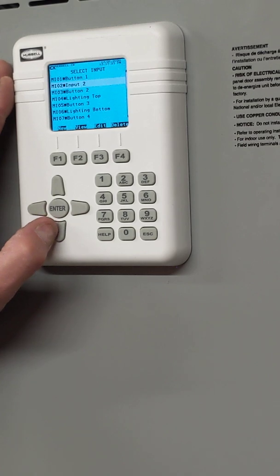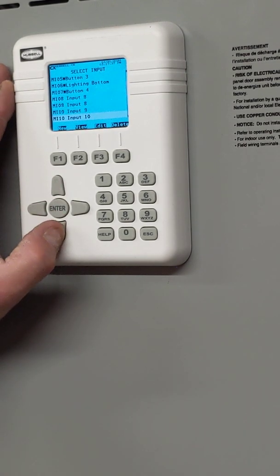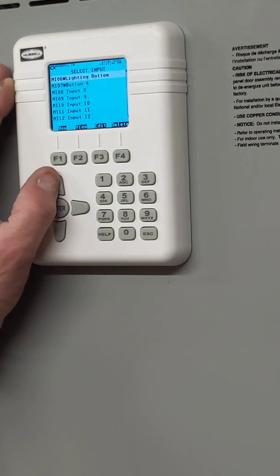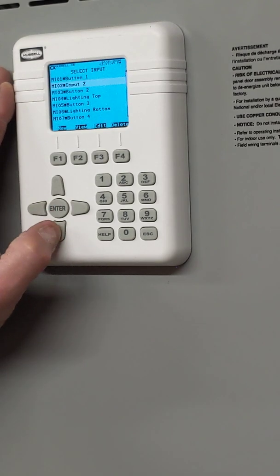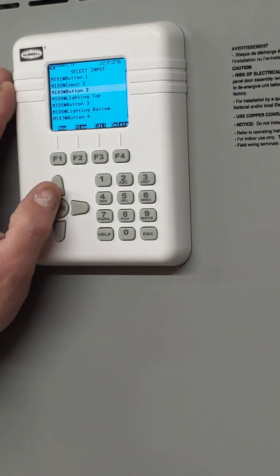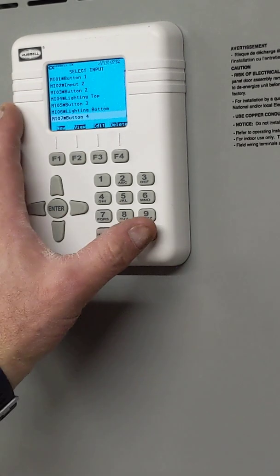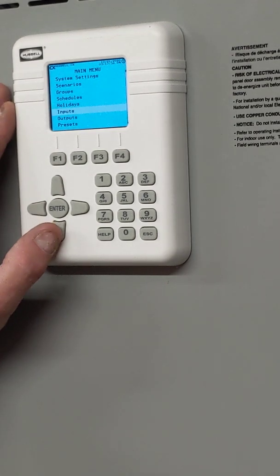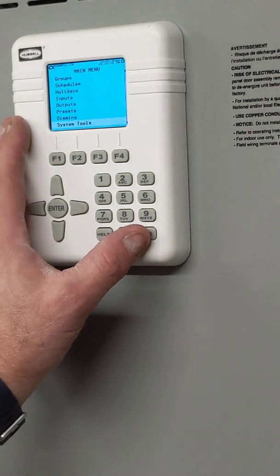Anyway, so you have to go through button one, input two, button two, lighting top, button three, lighting bottom, button four, input eight. If it says input, and then the number, that's just a default. So I don't have anything on those. So I'm only using a few of them here. Like input two is nothing. It's nothing. Button two. I could have just moved that up, but I didn't. Lighting top, button three. So, that's it. That's the inputs. The outputs, I don't have any. Presets, I didn't set that up. Dimming, I don't have. And system tools, it's not necessary to look through.